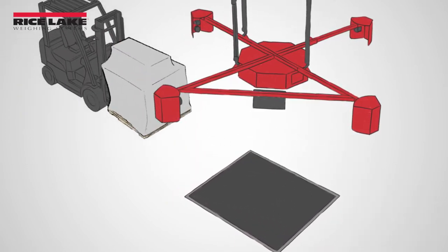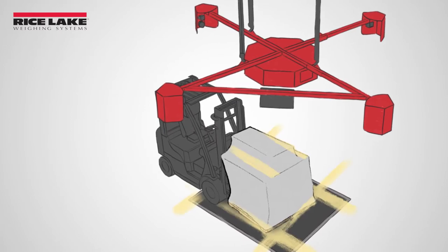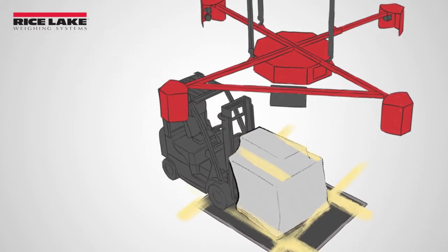The stop-and-go feature of the I-Dimension LTL allows operators to collect measurements on up to 10 pallets in just one minute.